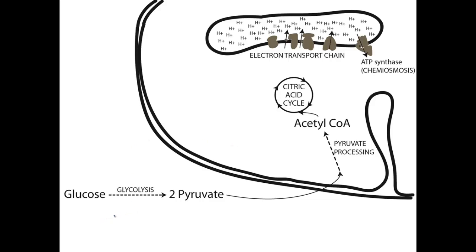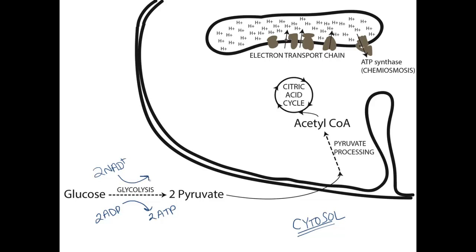Let's take a look at cellular respiration. In the first step, glycolysis, glucose is converted to two molecules of pyruvate out in the cytosol of the cell. Remember that glycolysis is actually ten reactions, each catalyzed by a different enzyme. The net inputs of glycolysis are two ADP to generate two ATP, and two molecules of NAD+ to generate two molecules of NADH.